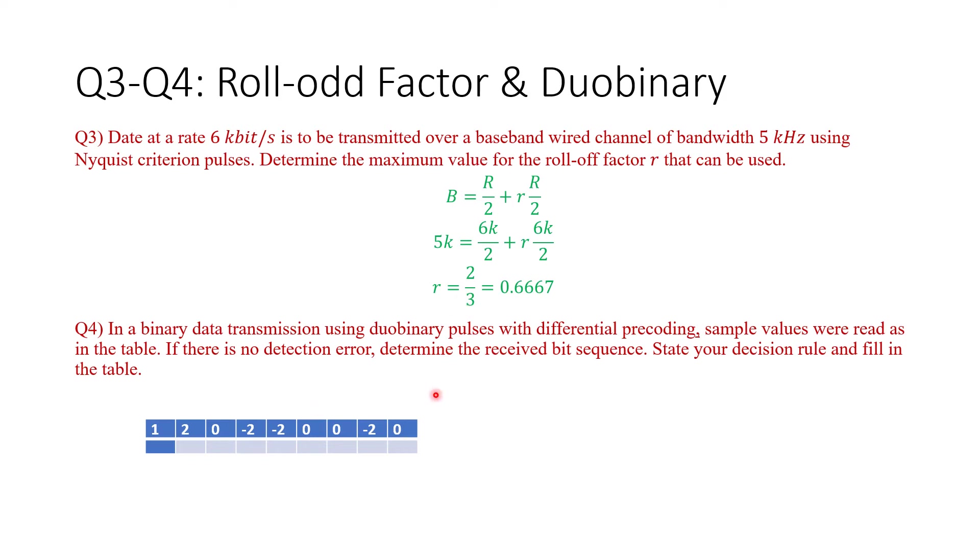Now I'm going to show the answer. The answer to this question is: the decision rule is 0 means 0, -2 or 2 means received bit equal to 1. Remember that this is duobinary with differential precoding. The answer would have been different if there were no differential precoding. This table shows you the correct answer.